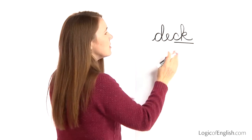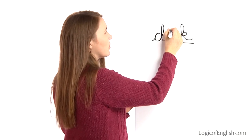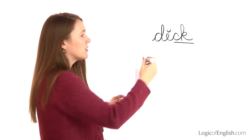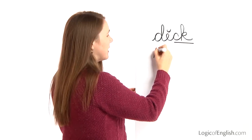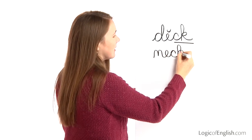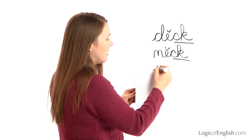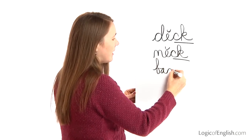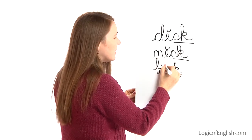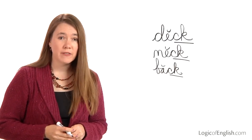Now, notice the two-letter k is used after a single short vowel in deck. Let's look at a few more words. We have the word neck: N, e, k. Once again, it's a single short vowel. And back: B, a, k. So two-letter k is used only after a single short vowel.